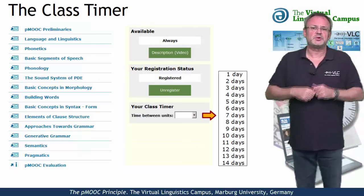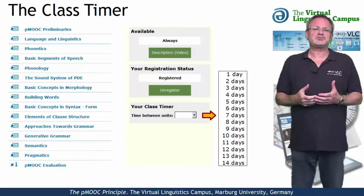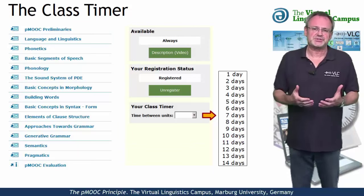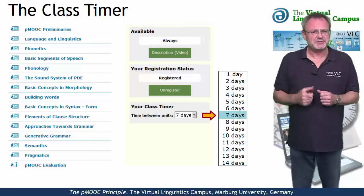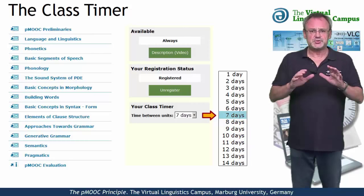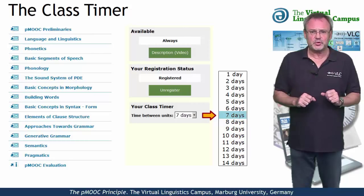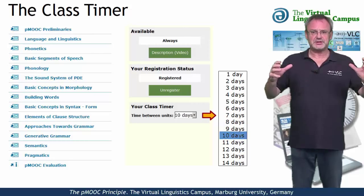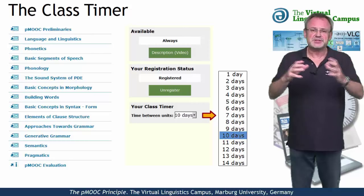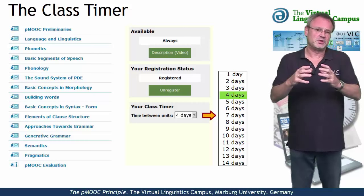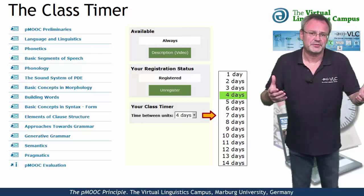For example, if you want to go through the class on a weekly basis, select the 7-day rhythm. If this is too short for you, go for the 10-day rhythm. If it's too long, select a 4-day rhythm.